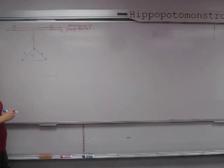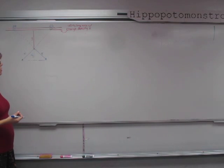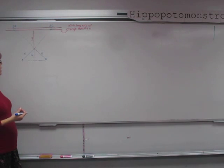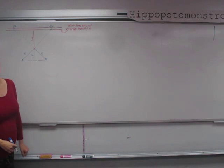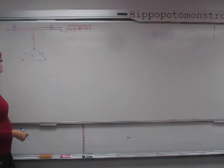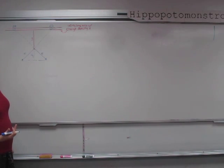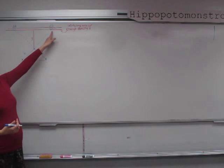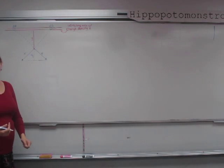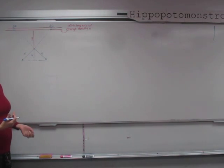If we look at these two electric fields, we notice that the x-components cancel out and we're just left with the y-components. So we should add up all the little y-components of the electric field, and that will give us our total electric field.